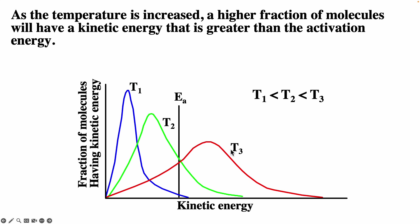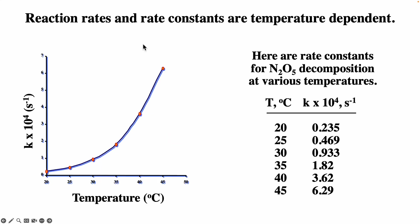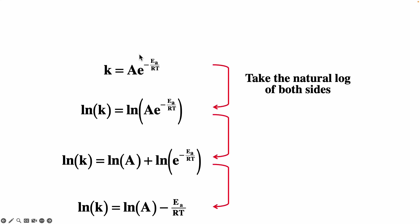T3 is the largest temperature. As you increase the temperature, you get a larger average kinetic energy and also a broader distribution. Reaction rates and rate constants are temperature dependent. The rate constant as a function of temperature actually increases exponentially. Starting with the Arrhenius equation and taking the natural log of both sides, we get ln(k) = ln(A) − Ea/RT.